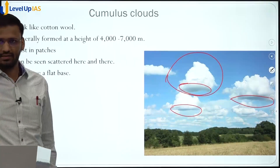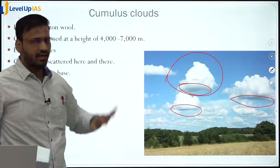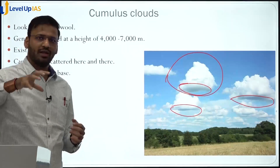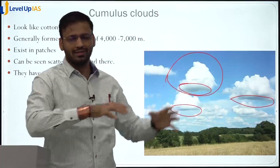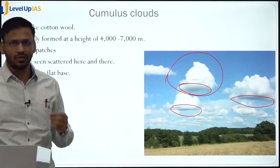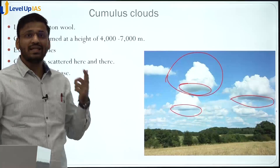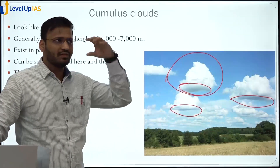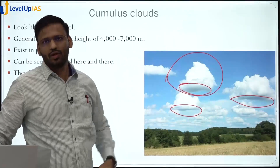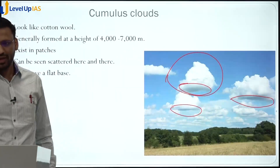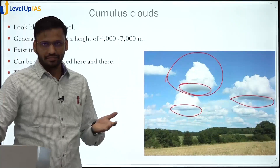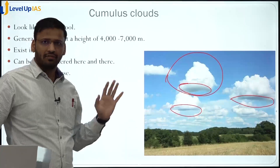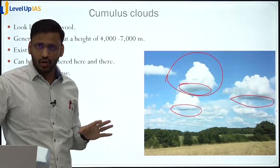In the rainy season you will see cumulus clouds floating from one place to another — it looks very beautiful. In cities we don't generally see them, but in villages you will see cumulus clouds moving from place to place. They have flat bases. Generally they don't give much rainfall, but once they are sufficiently cooled they can give rainfall.